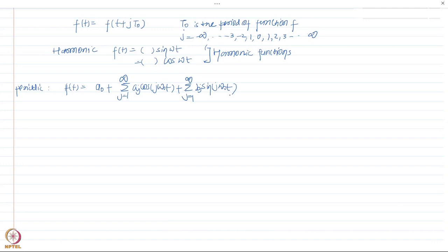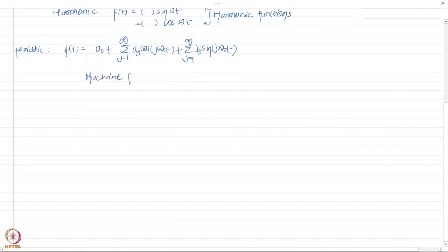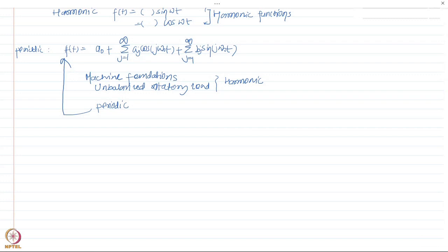If the excitation in reality is harmonic, a few direct examples are machine foundations where the load is applied as harmonic excitation, or an unbalanced rotating load — we are going to model that in this chapter. These can be directly modeled as harmonic excitation. Even if the excitation is periodic but not harmonic, the response can still be obtained as the sum of several harmonic responses.